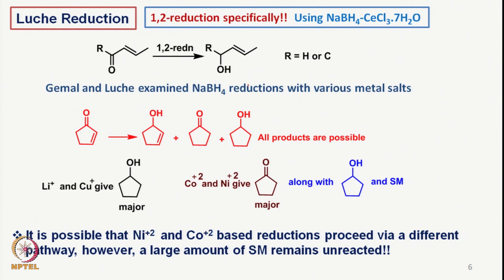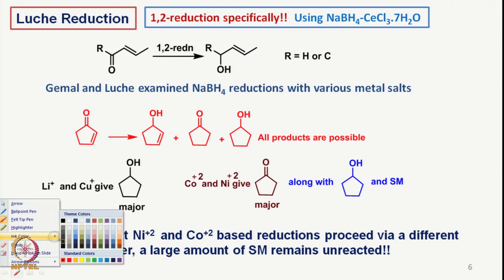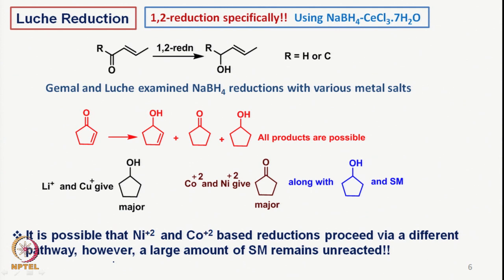We have another reducing system known as Luche reduction, named after its discoverer Luche, which allows 1,2-reduction to take place, particularly when there is an alpha,beta unsaturated ketone. The reagent utilized is a combination of sodium borohydride and cerium chloride heptahydrate (CeCl3·7H2O).